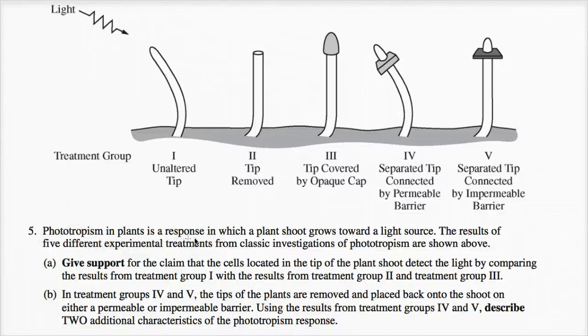Phototropism in plants is a response in which a plant's shoot grows toward a light source. The results of five different experimental treatments from classic investigations of phototropism are shown above.